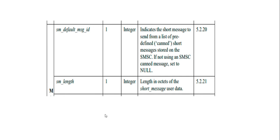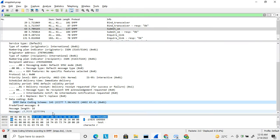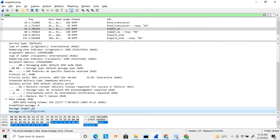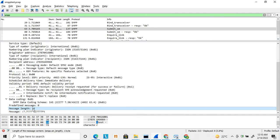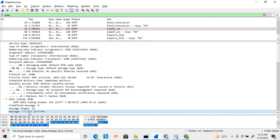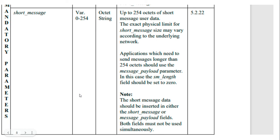Next is the SM length — one byte is reserved for mentioning the total length of the short message you are sending. After that comes the actual short message content. SMPP supports up to 254 octets for a short message. If the message exceeds this limit, multi-part messages are used. Multi-part submit_sm is a different topic that I will be describing in another video.